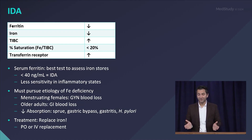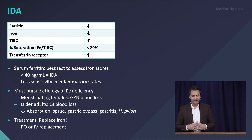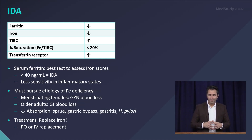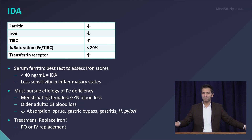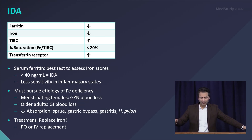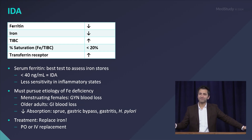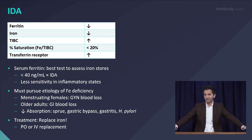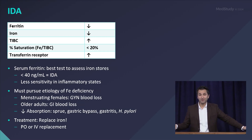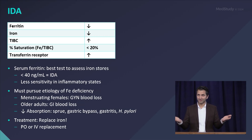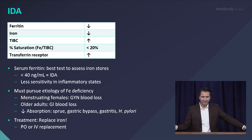The gold standard for diagnosing iron deficiency is a low serum ferritin. The exact cutoff point varies, but for our intents and purposes, if it's less than 40, consider the patient to be iron deficient. Remember that ferritin is an acute phase reactant, so you may have a ferritin higher than that in a patient who is still truly iron deficient — you have to understand the impact on sensitivity in those clinical situations.